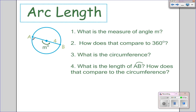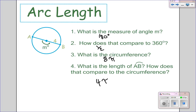What is the measure of angle M here? This is the diameter, so it's a semicircle, so it has to be 180. How does that compare to 360? It's half. The circumference, with radius 4, is 2 times 4 times pi — so 8 pi. If I want to know the length of AB, I'm taking half of the circle. If the whole circle is 8 pi, then half would be 4 pi.